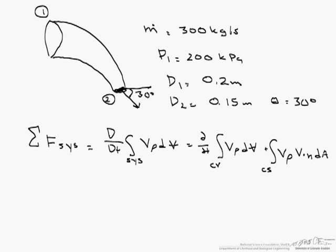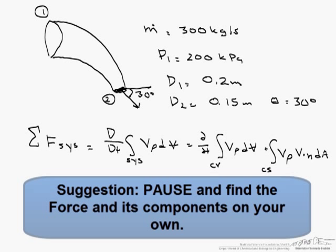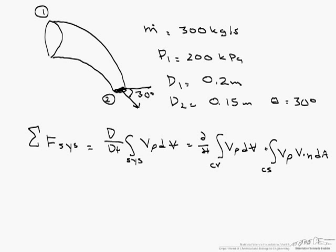Keep in mind all of these v's are velocity vectors. What we're looking for here is the force required to keep this bend in place, and we're looking for the x and y component. This screencast is about the x component. So the sum of the forces in the x direction is over the control surface rho u, which is the velocity component in the x direction, v dot n dA.